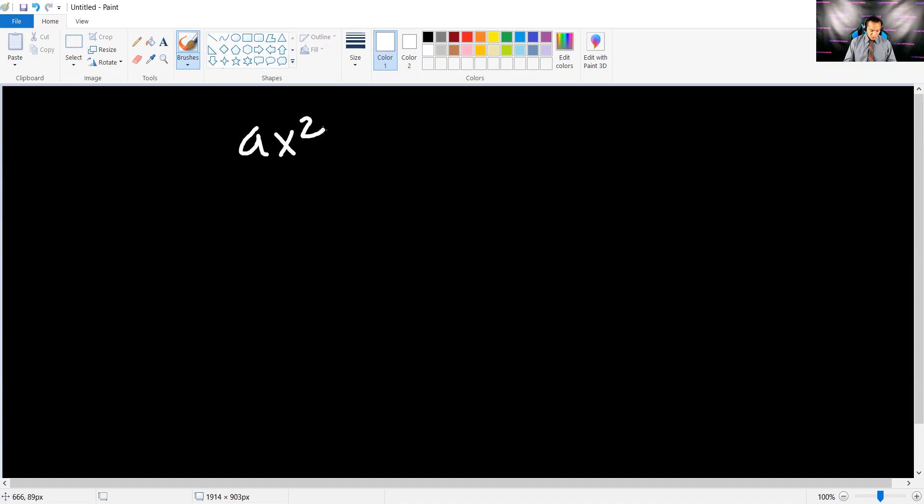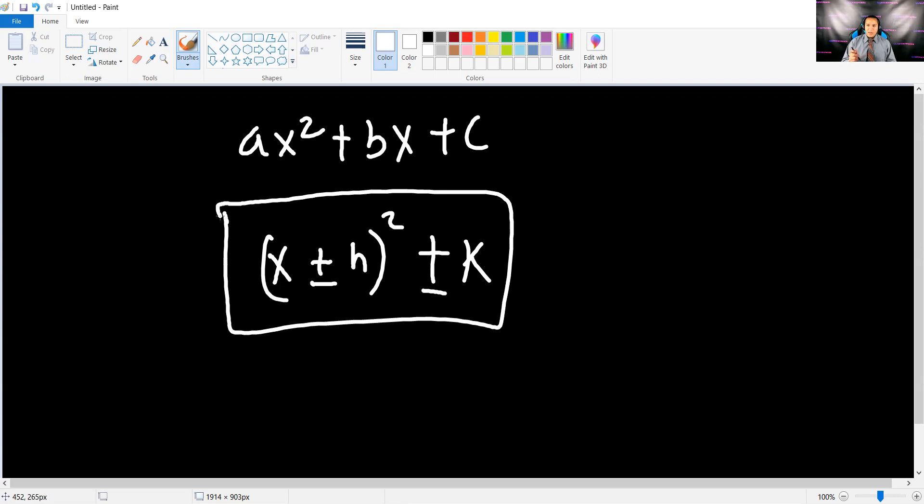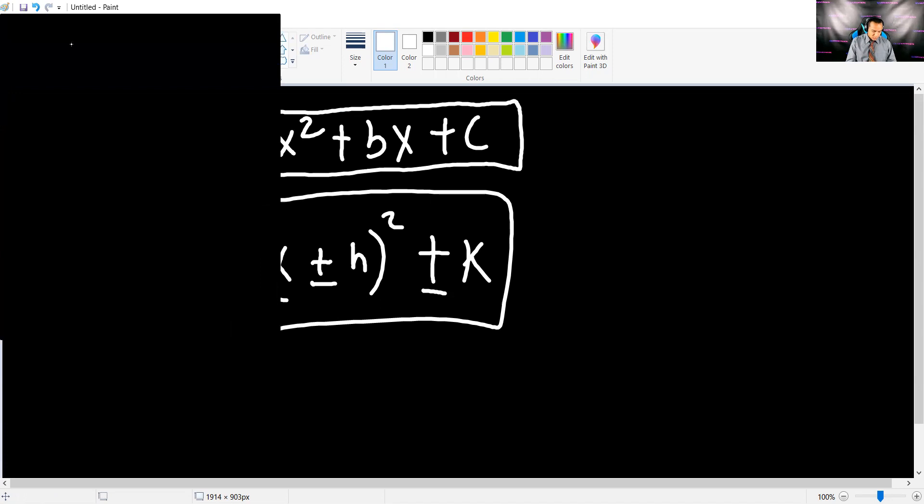So it takes a polynomial function, ax squared plus bx plus c, where a, b, and c are any number, and it turns it into something like x plus or minus h squared plus or minus k. So remember, we went over this last time, and that's what you want to have it in if you want to graph a parabola. Now, this is still a parabola, but it's not in a graphable version.